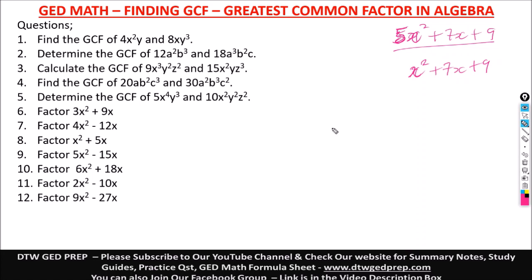Number one says: find the GCF of 4x²y and 8xy³. A factor is a number that when you divide another number by it, it gives you a whole number without a remainder. Between 4 and 8, two is a factor because dividing 4 by 2 gives 2, and dividing 8 by 2 gives 4. But 2 is not the greatest factor.